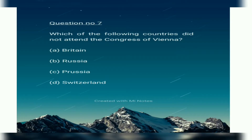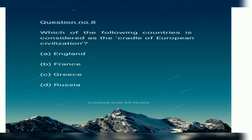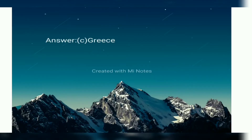Which of the following countries did not attend the Congress of Vienna? The options are: A. England, B. France, C. Greece, D. Russia. The correct answer is Option C: Greece.